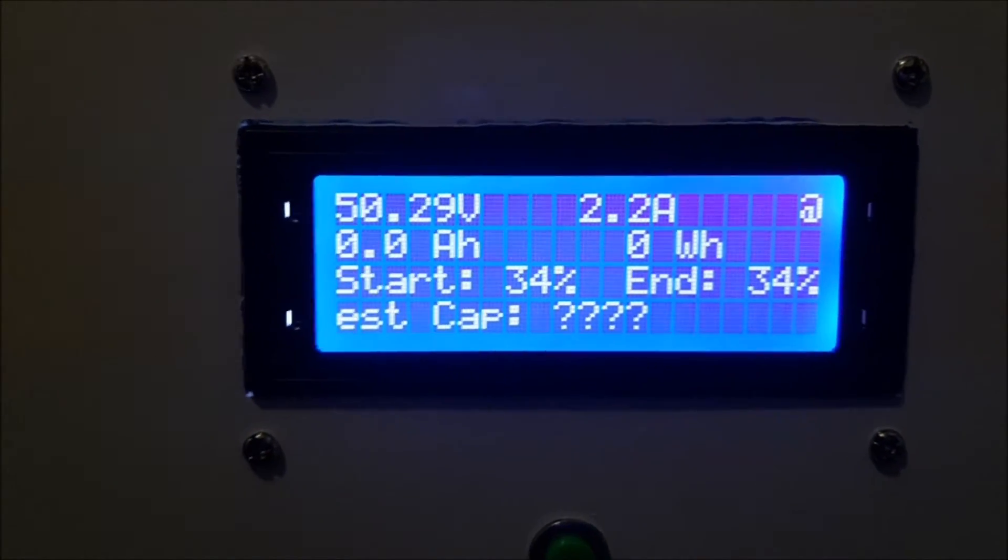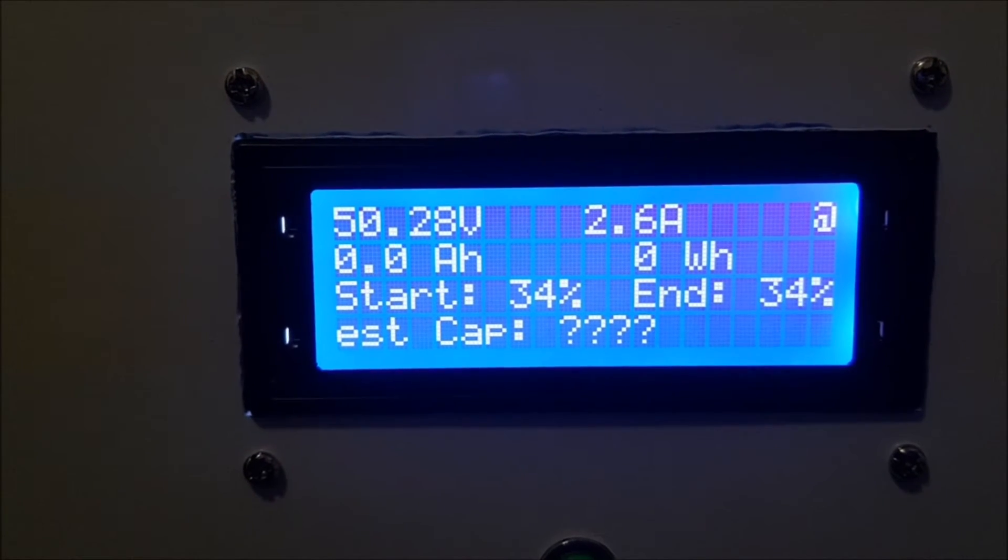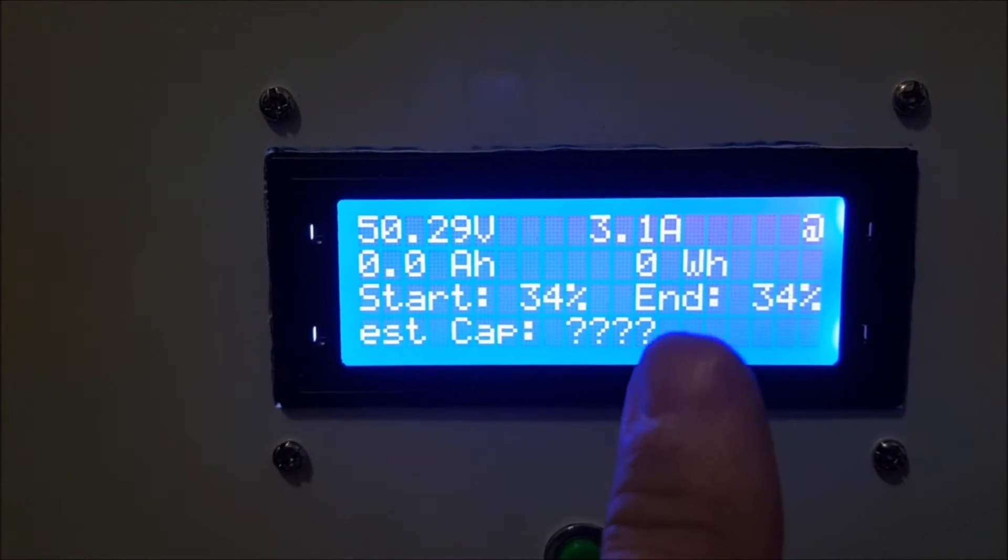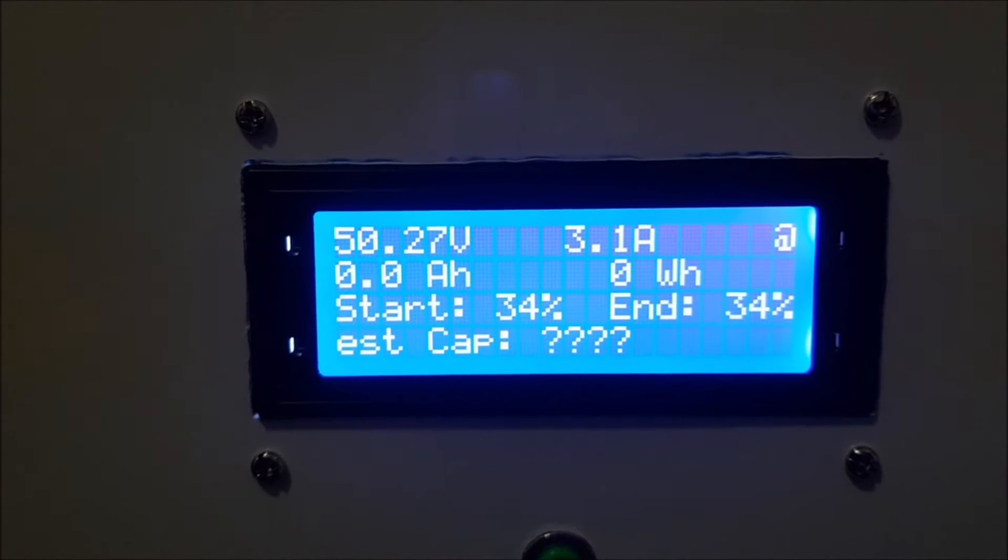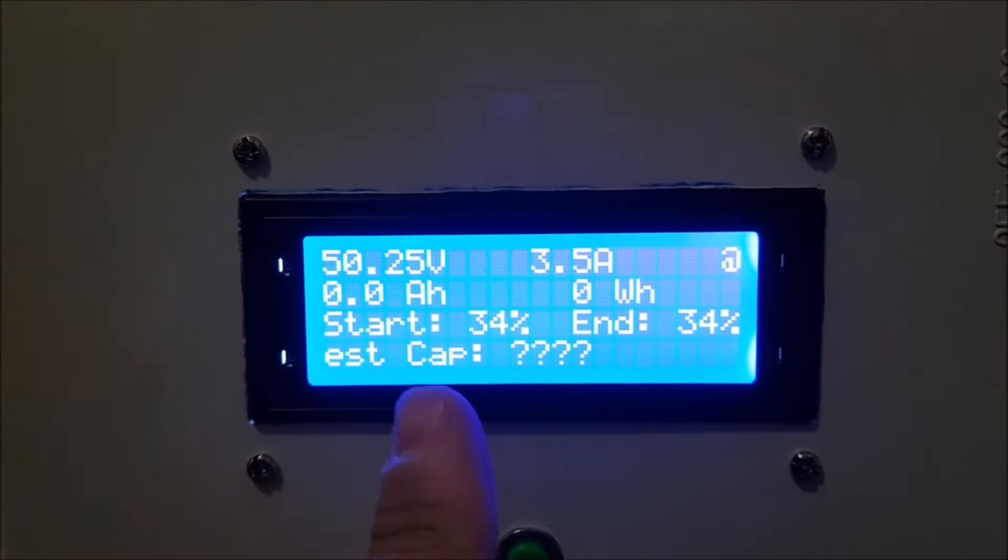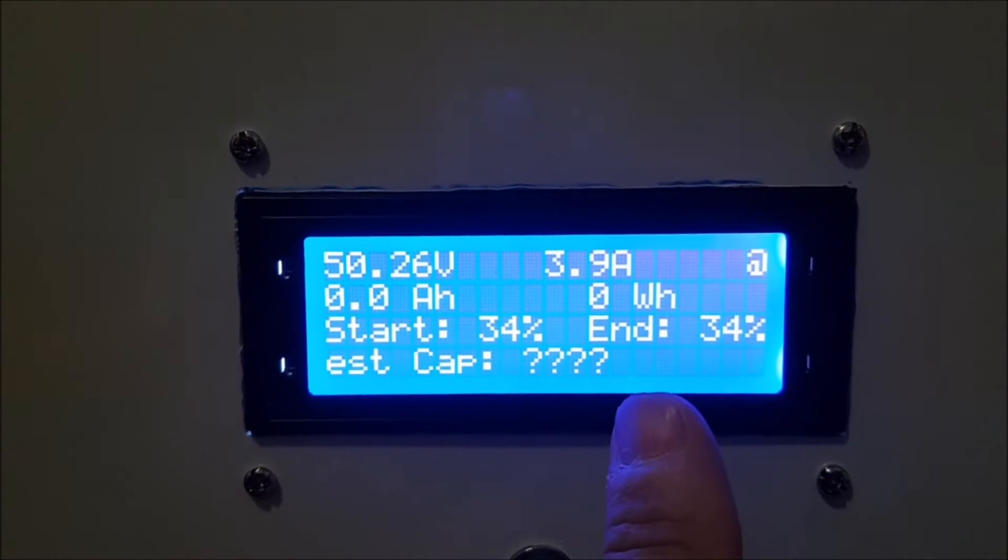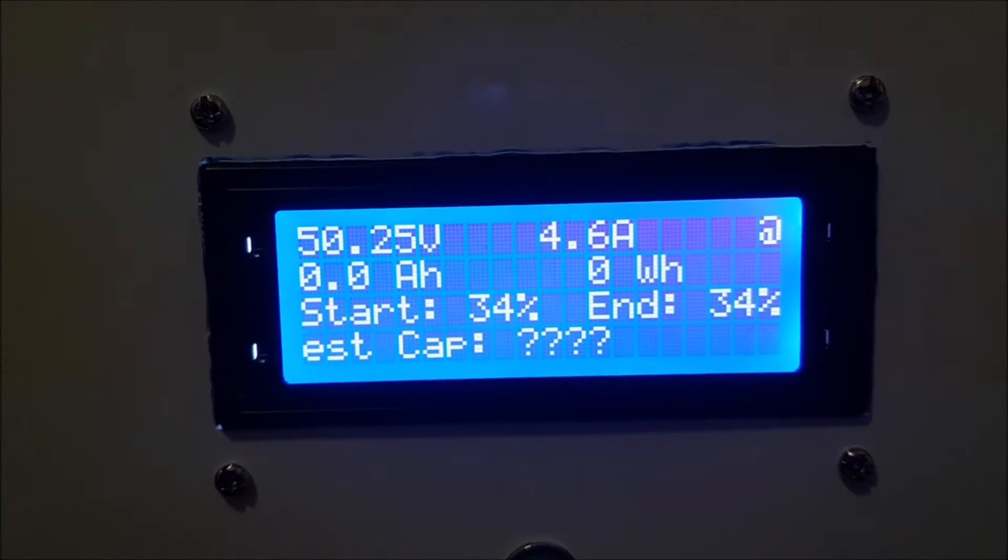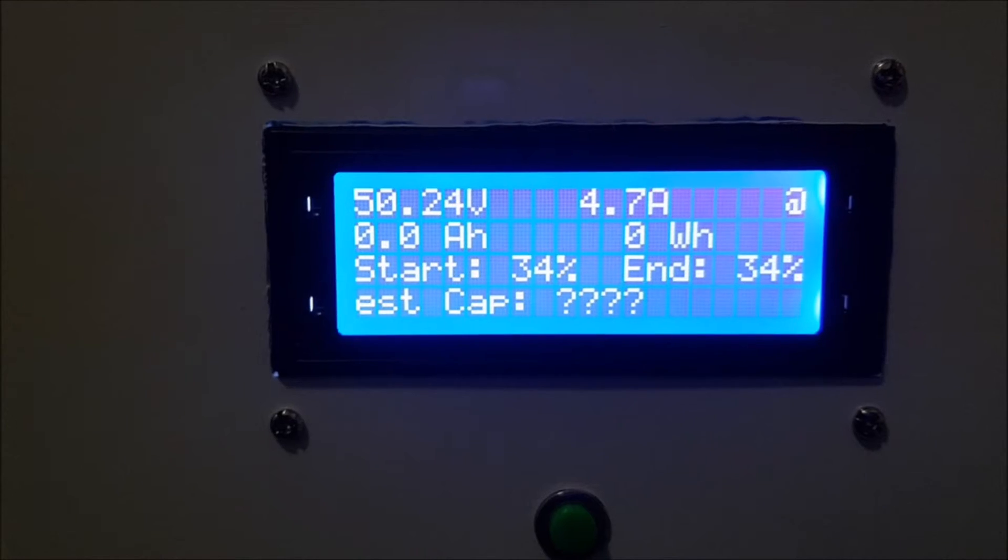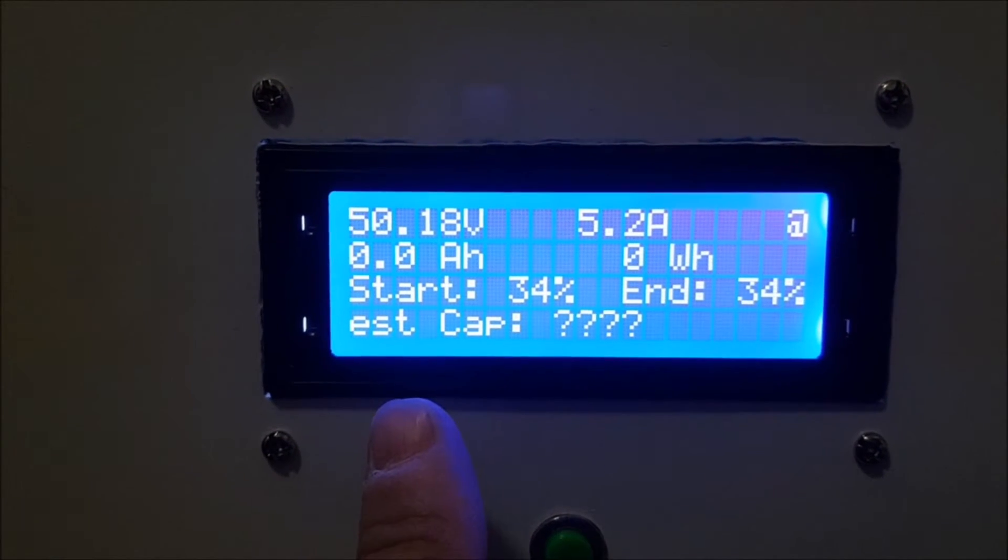And this looks like this now. So we have the voltage, we have then the amps. So in this moment we are really discharging, and now we have the two counters: first amp-hour counter and then watt-hour counter. So this will now count, every three minutes the numbers will be updated. And with the start of the discharge mode we also have taken the start state of charge, and the end state of charge will of course change with the ongoing discharge.